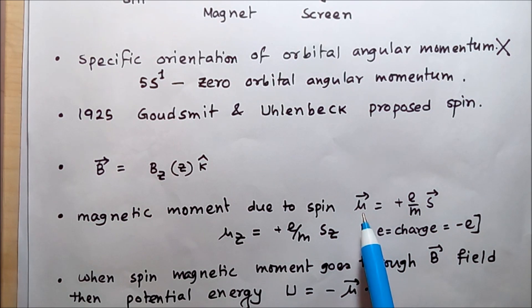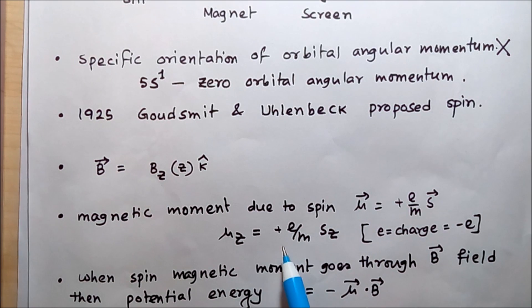As this is a vector relation, the components of the left-hand side match the components of the right-hand side. If we take only the z-component of the magnetic moment, then μ_z = (e/m)S_z.